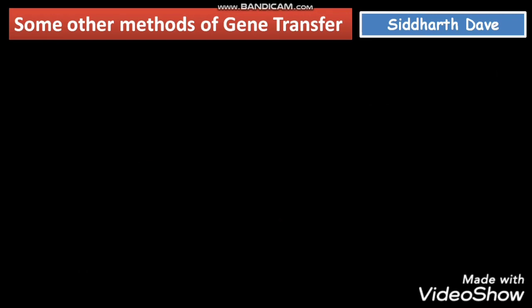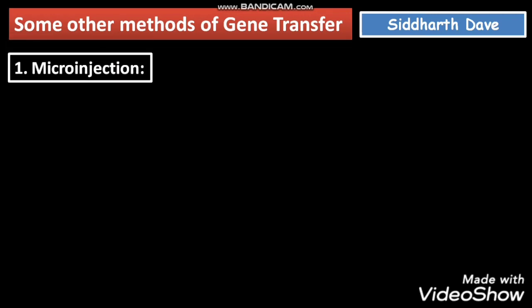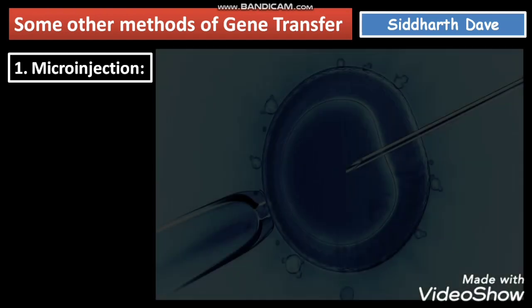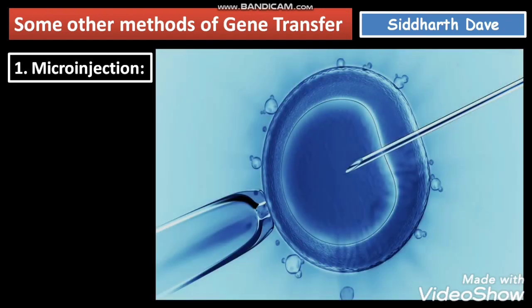Some other methods are also used. One is micro injection. In this method, your DNA can be directly injected into the nucleus of the animal cell. Micro injection technique is generally used for animal cells, and it is the most interesting technique.